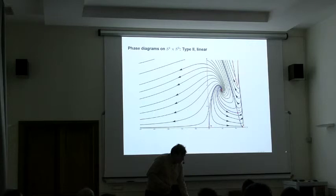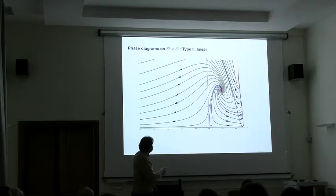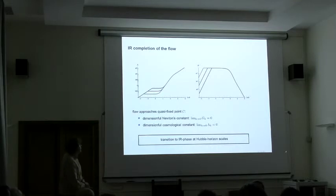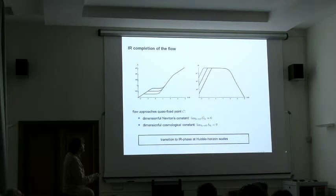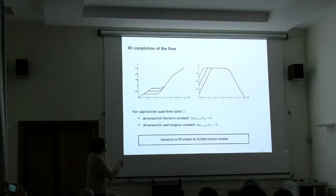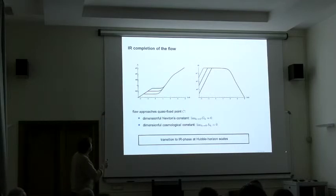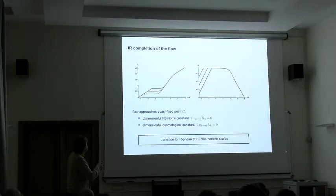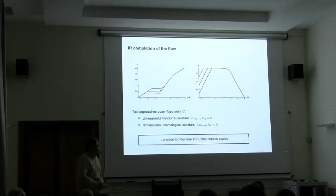Let's convert this story to dimension full parameters. Let's go to this corner and look what Newton's constant and the cosmological constant in this corner do. Here I have my energy scale, the renormalization group scale. Here is the cosmological constant. Here is dimension full Newton's constant. You see at very high energies, you have the non-Gaussian fixed point. At intermediate energies, there is a plateau. This is where general relativity lives. And then, if we go to Hubble horizon scales, you see there is a new phase setting in. The cosmological constant wants to go to zero, dynamically.